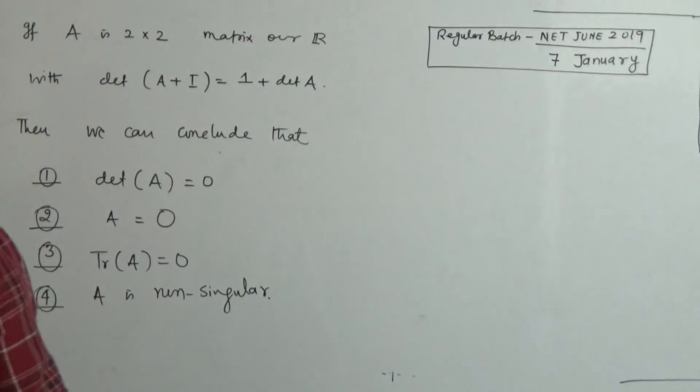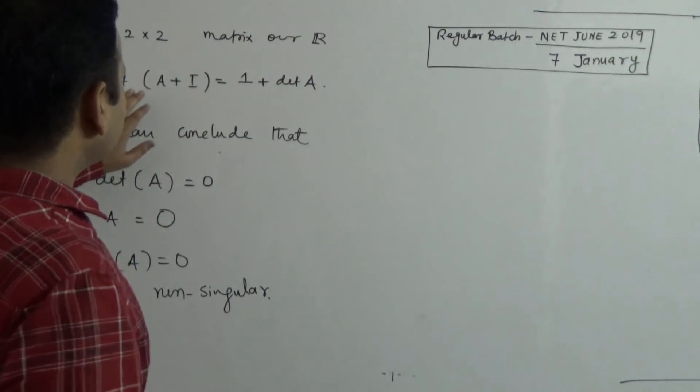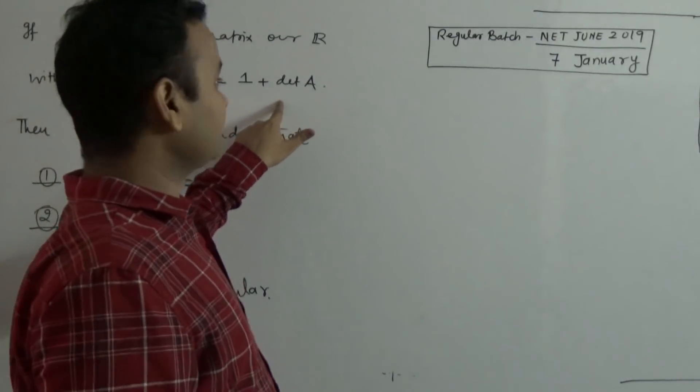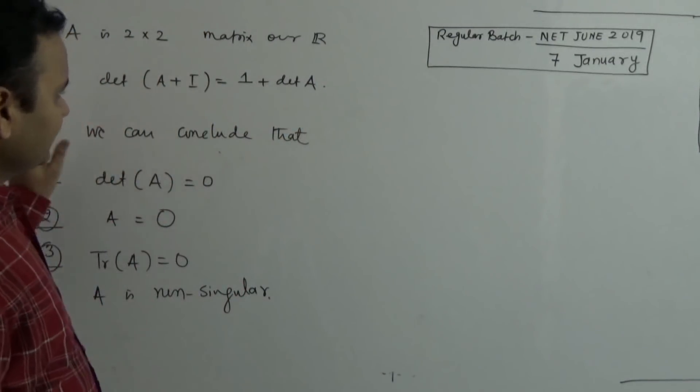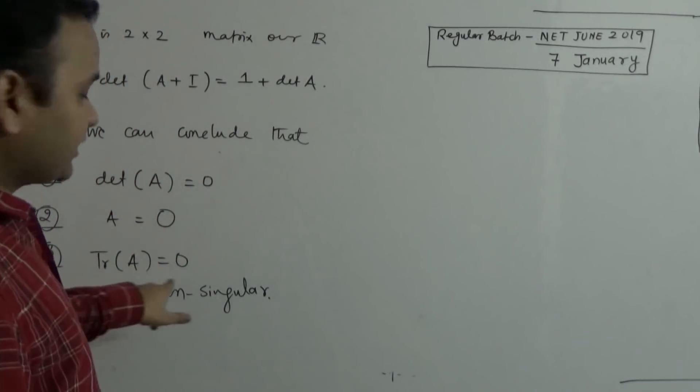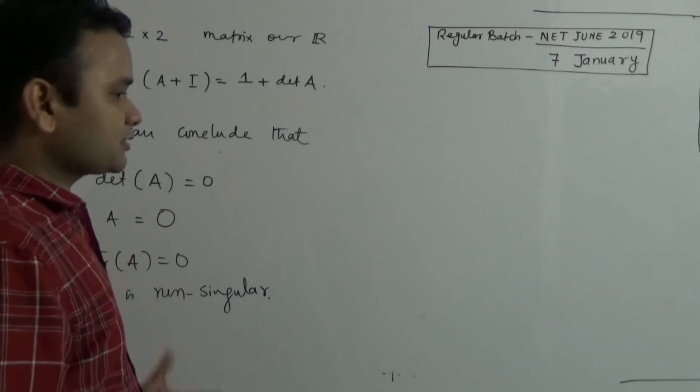The question is very simple. A is a 2×2 matrix over R, where the determinant of A+I is defined as 1 plus determinant of A. Then, what can we conclude? The determinant of A is 0, A equals 0 matrix, trace equals 0, or A is non-singular matrix.